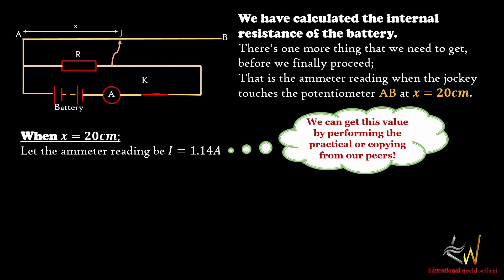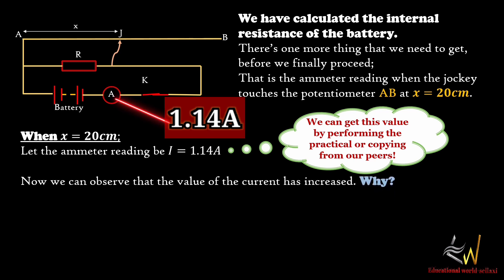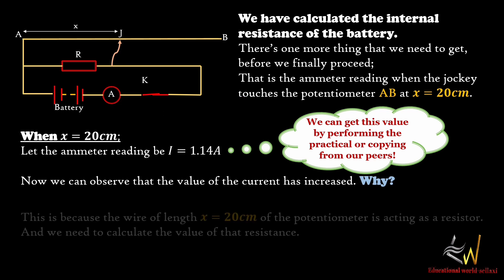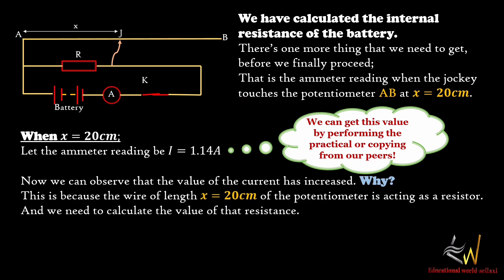From what our peers have gotten, or we can perform it ourselves. The ammeter reading, let's assume it to be 1.14 Ampere. Now we have to observe something: the current has increased. Why? This is because the wire of length S, equal to 20 cm of the potentiometer, is acting as a resistor.